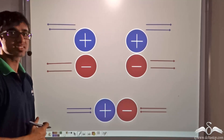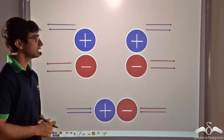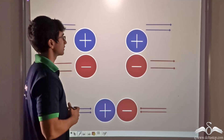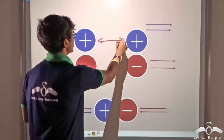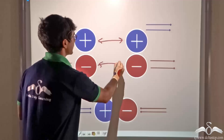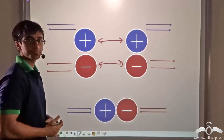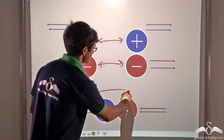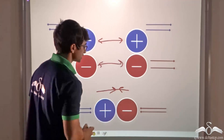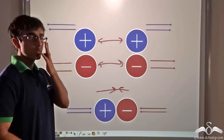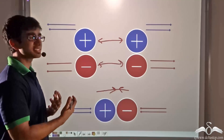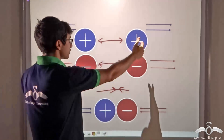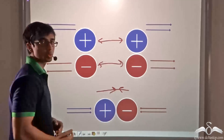From our previous discussion, we studied that like charges repel one another — positive repels positive and negative repels negative. We also learned that unlike charges attract one another, meaning positive attracts negative. Now, how are these repulsions or attractions taking place? How are the charges moving away from or coming close to one another?